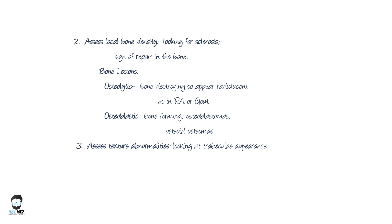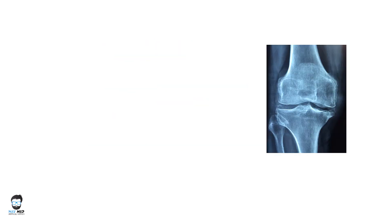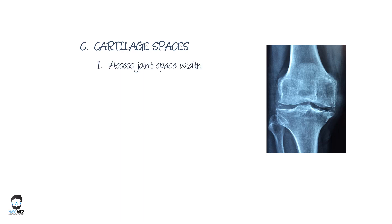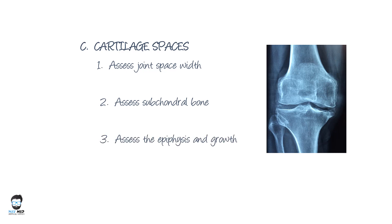You should also assess texture abnormalities by looking at the trabeculae, especially in femoral neck fractures. For C — cartilage — as shown in an image of a knee with arthritis, you assess the joint space width and the subchondral bone for cysts and other changes. Also assess the epiphysis, especially in children.